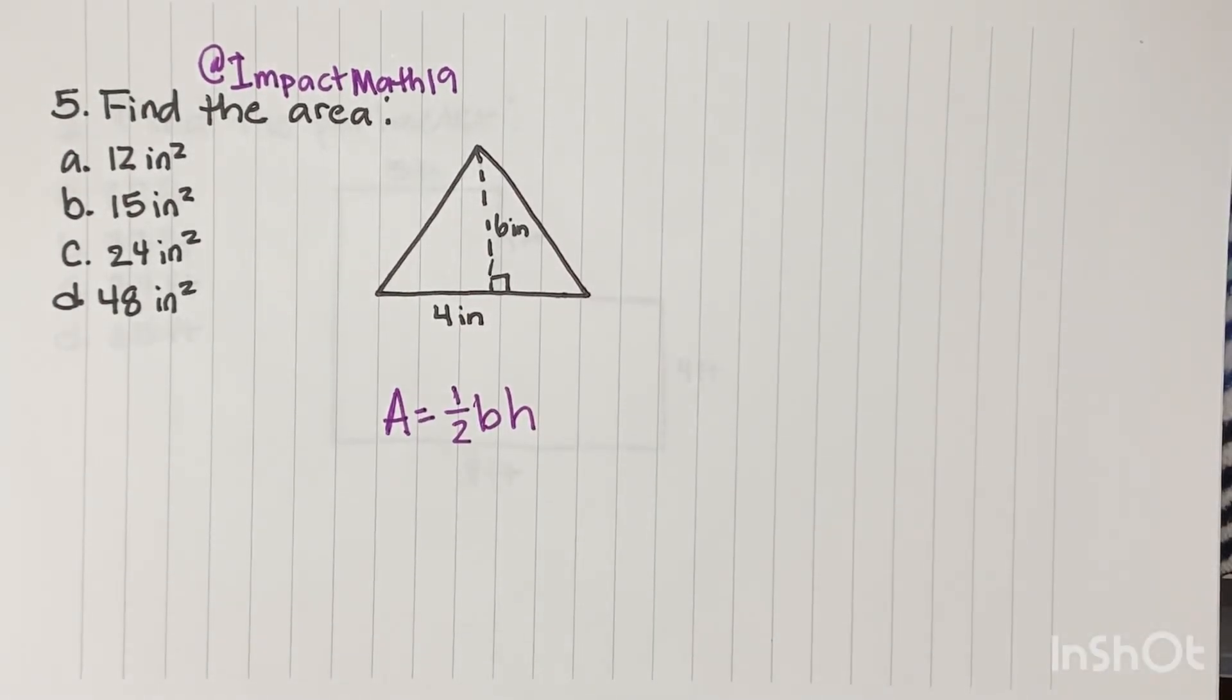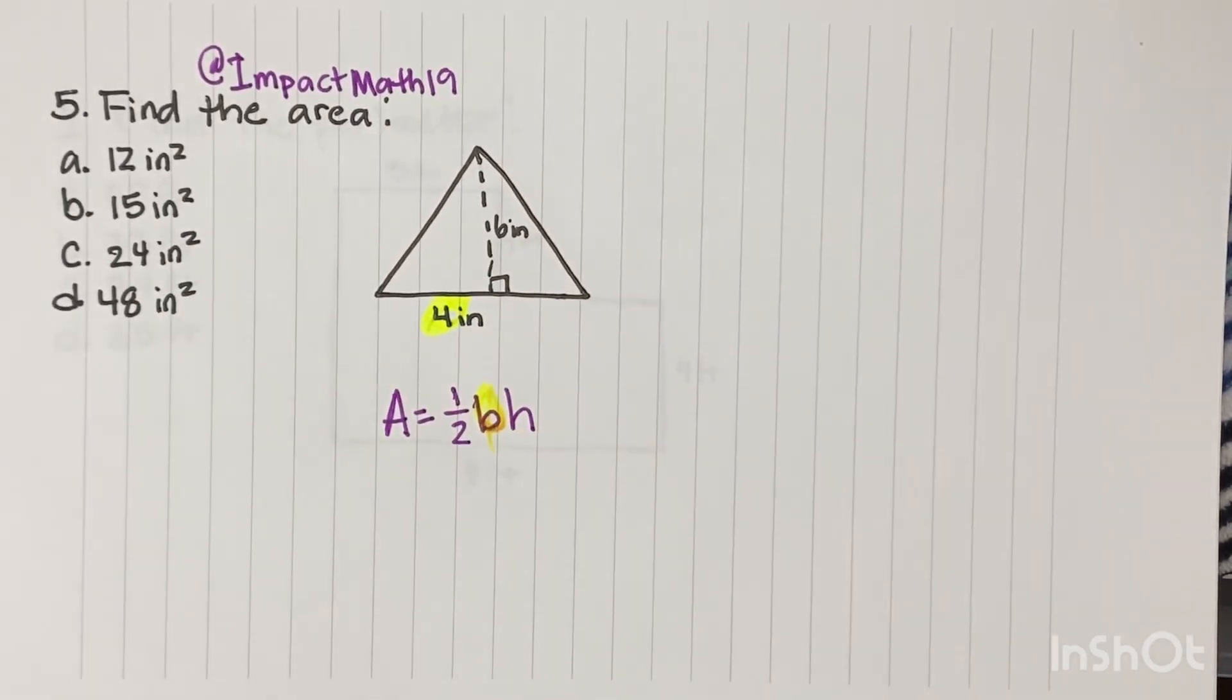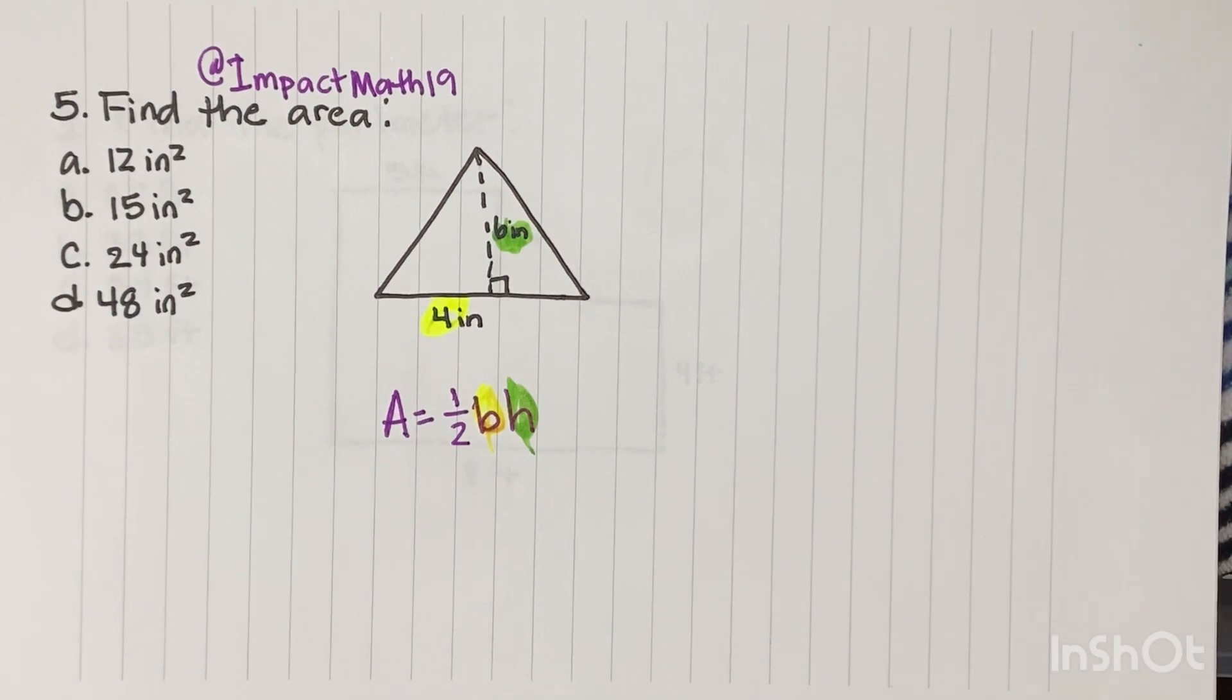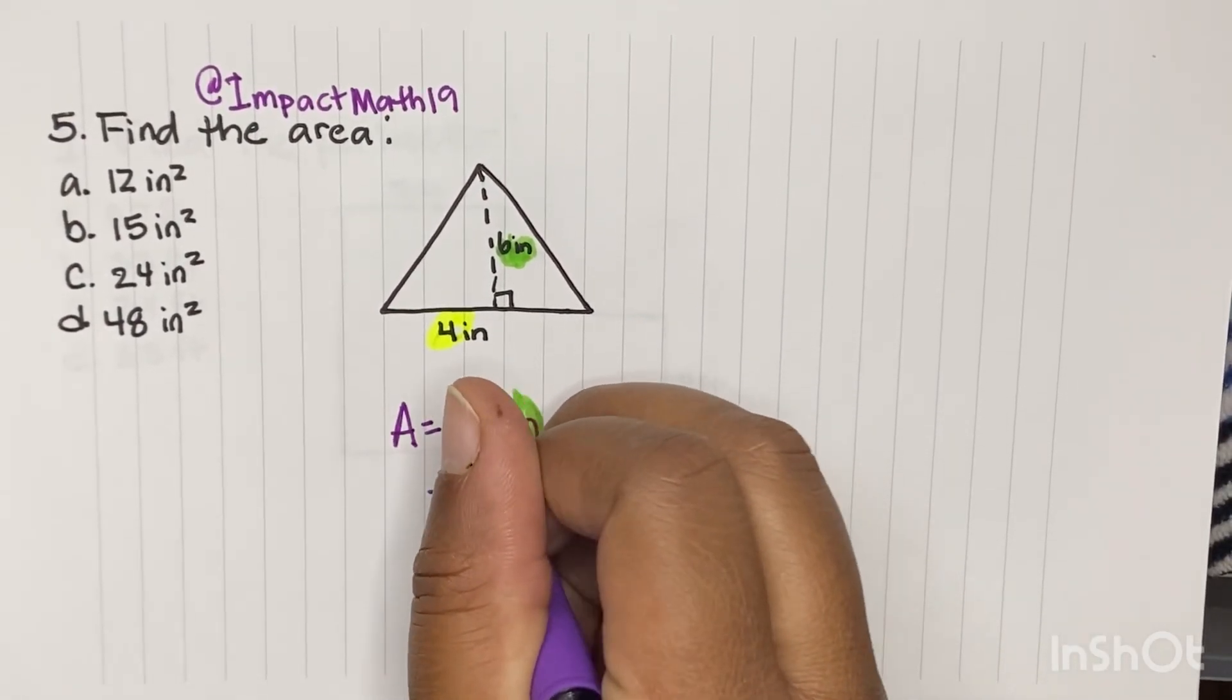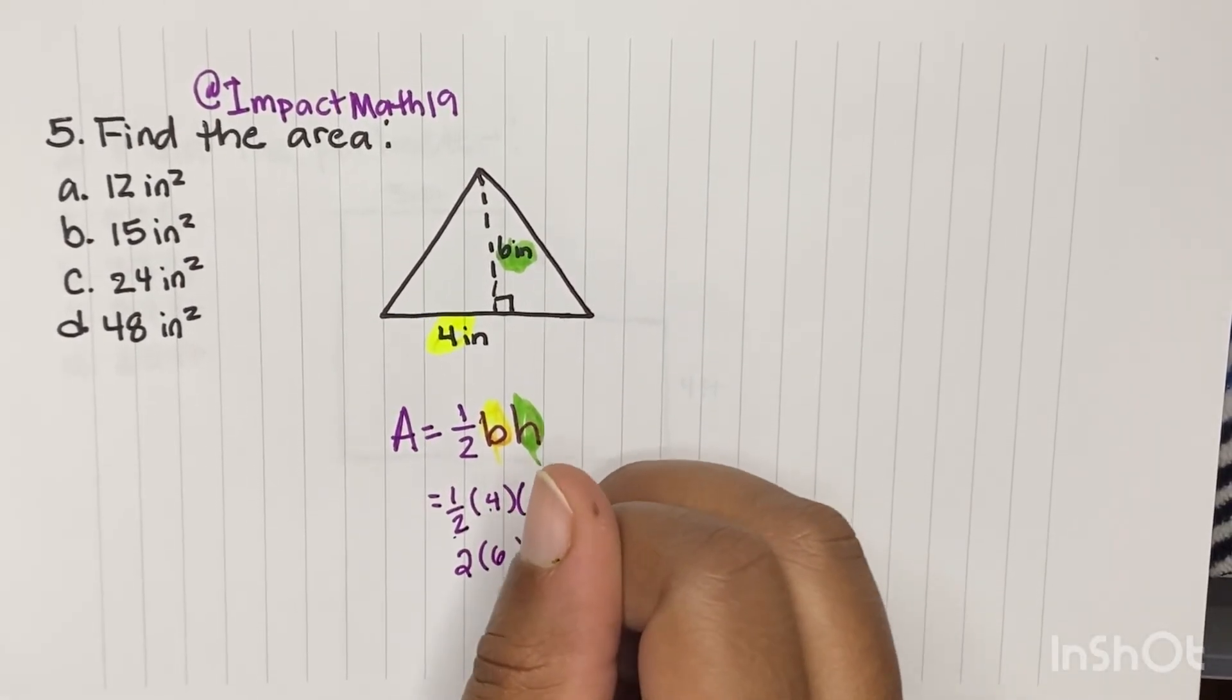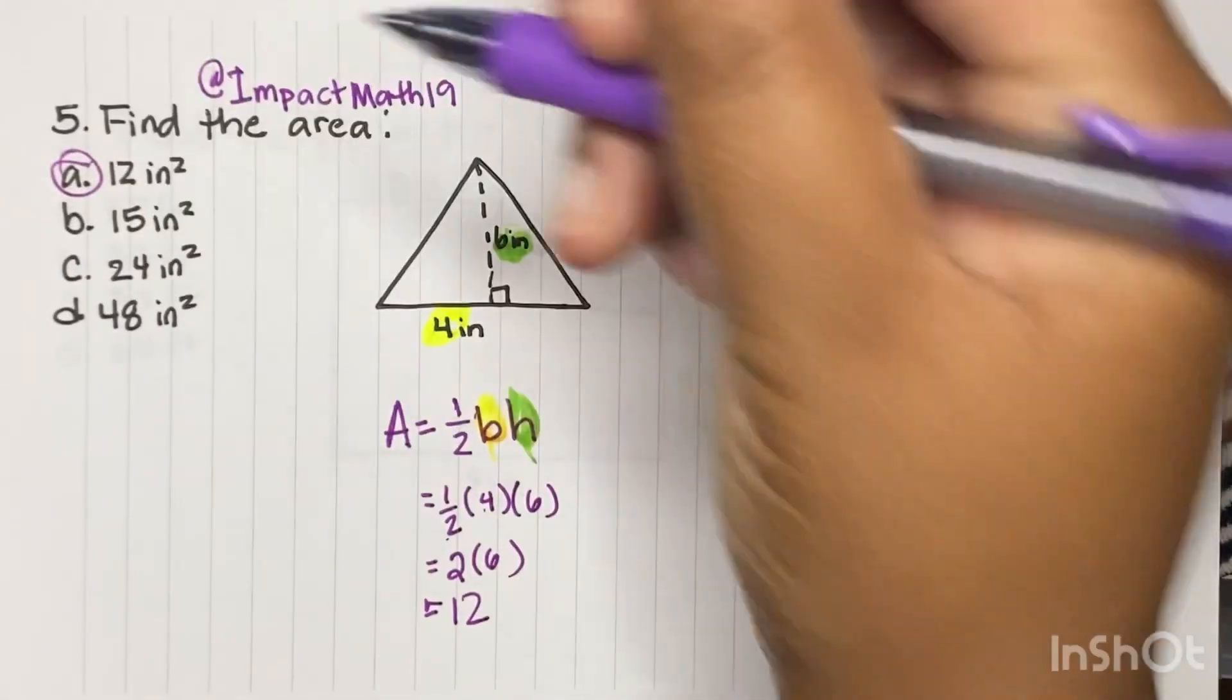So our base is going to be this 4. So that's what we're going to plug in for our B. And then our height, okay, height is 6. We're going to plug that in. So we're going to do 1 half times 4 times 6, okay? A half of 4 is 2. Times 6 would give us 12. So A would be our answer.